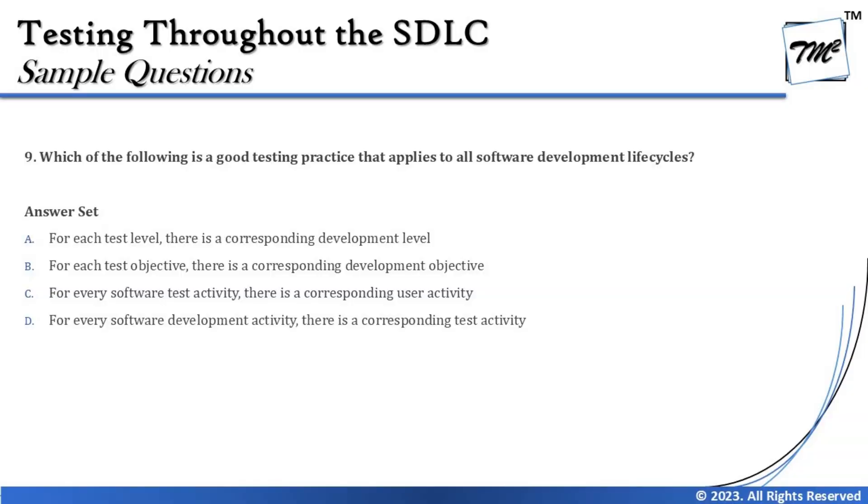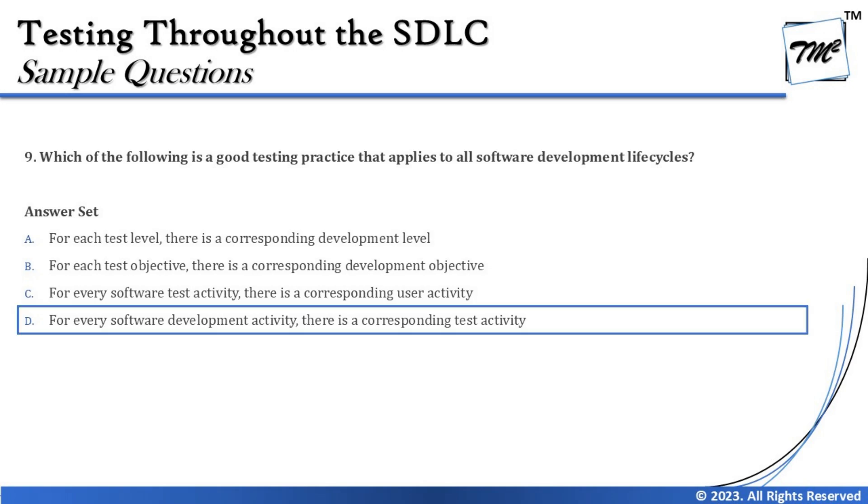For those who are new, the four characteristics are: first, for every development activity there is a corresponding testing activity; second, those activities include test analysis and test design; third, for every test level there must be objectives specific to that level; and fourth, testers should be involved as soon as the first drafts are available. So the right answer to question 9 is D.